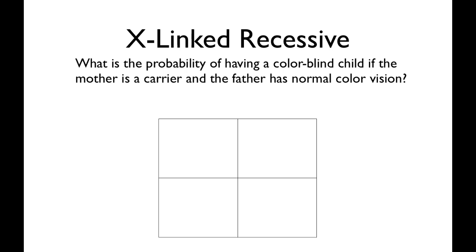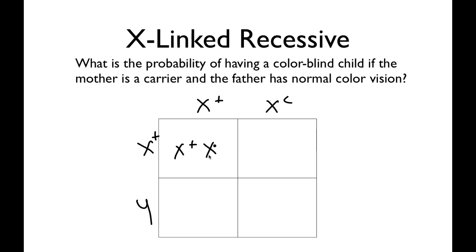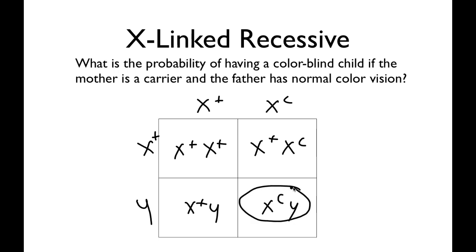Here's a typical problem: what is the probability of having a colorblind child if the mother is a carrier and the father has normal color vision? For this, I highly recommend the Punnett square. The mother is a carrier — one of her X's is normal, the other carries the colorblind allele. The father is normal. Filling out the square: one female will be totally normal, one female will be a carrier, one male will be normal, and one male will be colorblind. So the probability of having a colorblind child is one in four.